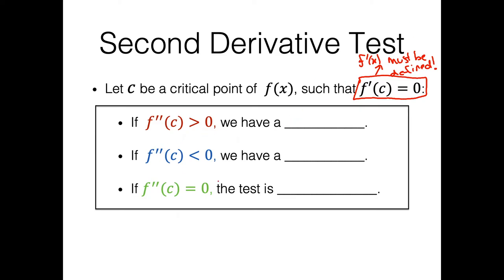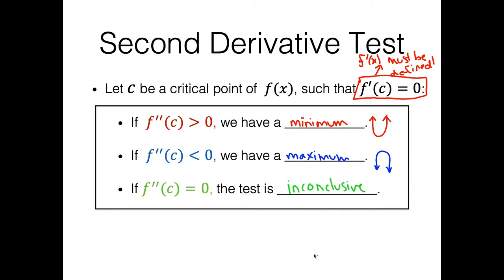Given this, here's what we can conclude. If our second derivative is positive, we have a minimum — this gives us an upward parabola shape. If our second derivative is negative, we have a maximum — that gives us an inverted parabola shape. And if our second derivative is equal to zero, then the test is inconclusive, because it doesn't tell us any useful information about what's really happening.